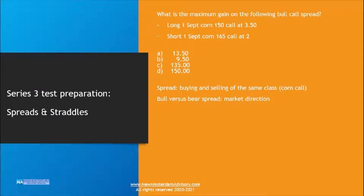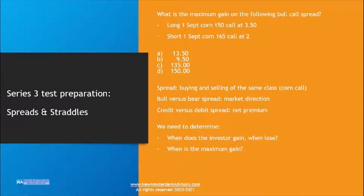This is confirmed as a bull call spread — the investor looks for the market to go up. A bear spread means the investor looks for the market to go down. This is also a debit spread, meaning we pay out money net: the long call costs 350, the short call receives 2, so net we're paying out money. That is a debit spread versus a credit spread where we would have received money. We need to determine when the investor gains or loses, when the maximum gain is achieved, and what the cost of the spread is.